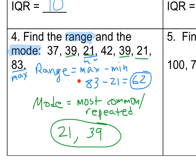Alright, so the range is maximum minus the minimum. It's the distance of my data from the beginning to the end, and so you can just take the biggest number minus the smallest number. 83 minus 21 gives us 62. The mode is the most common, the most repeated, the most popular.